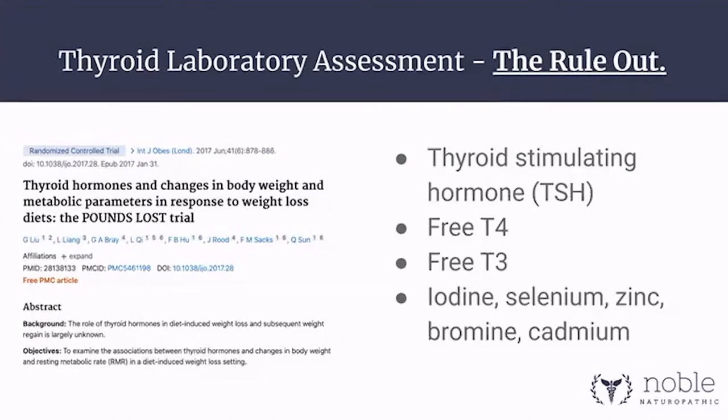When the TSH is above 5.0, I really like to look at nutrients that are required to make thyroid hormone — things like iodine, selenium, and zinc. Then we look at things that might cause inflammation of the thyroid, like bromine and cadmium. Those are typically part of a functional assessment for thyroid that you might see come across your desk as well.